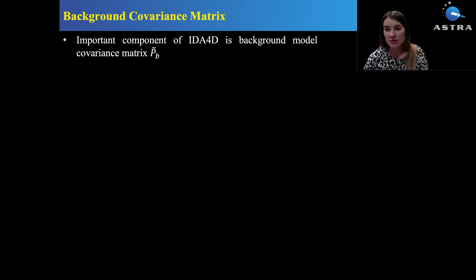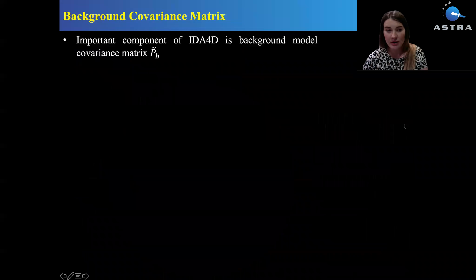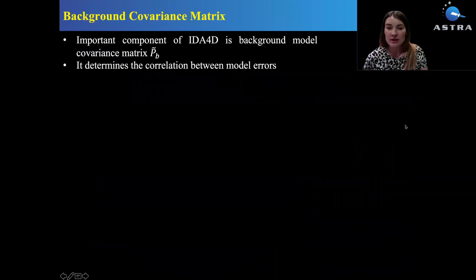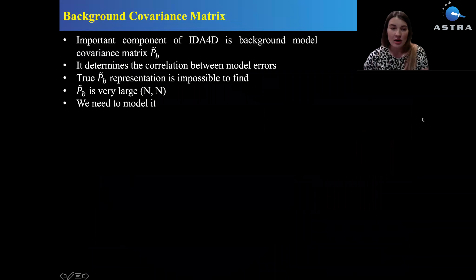The background covariance matrix is an important component of ionospheric data assimilation model. It determines the correlation between model errors. To find the true Pb representation is impossible because we don't know the truth everywhere on the globe for the density, plus this matrix is very large. It has n by n elements where n is the number of grid cells in IDA4D.